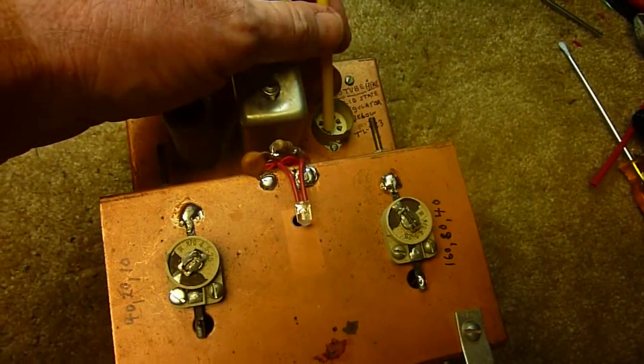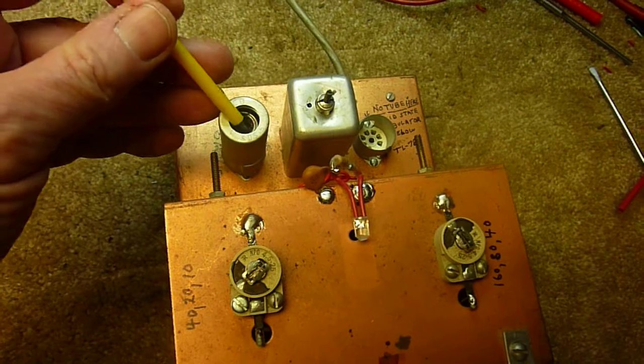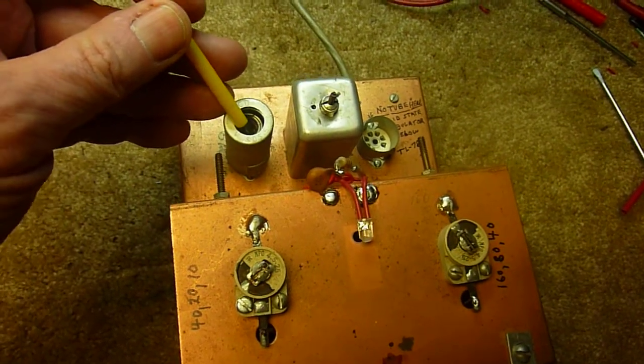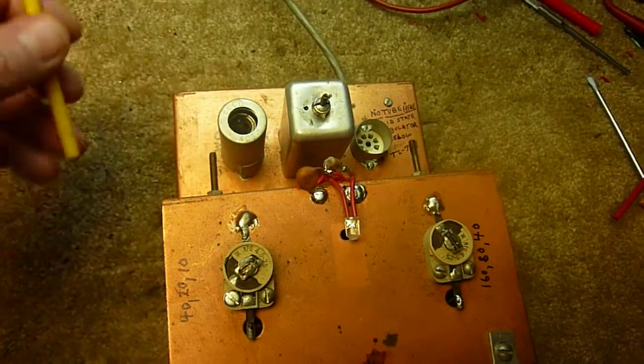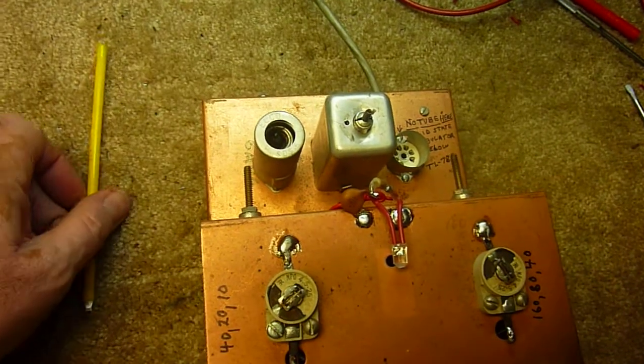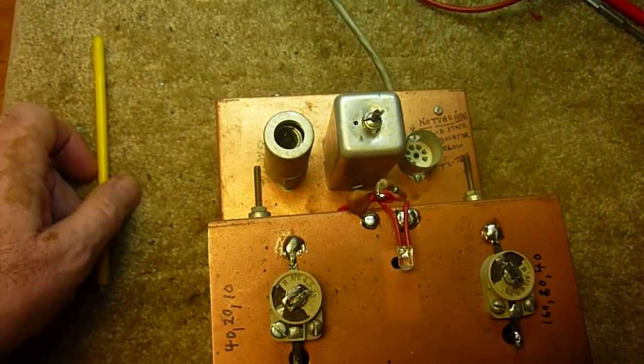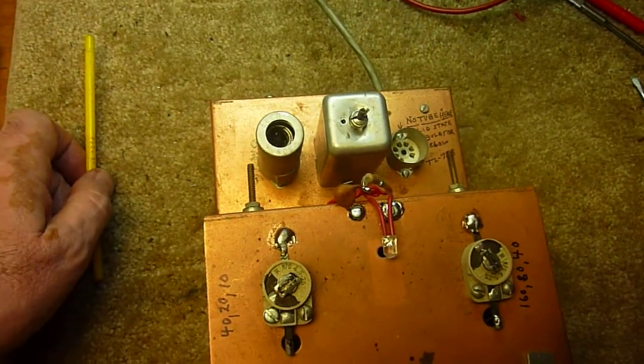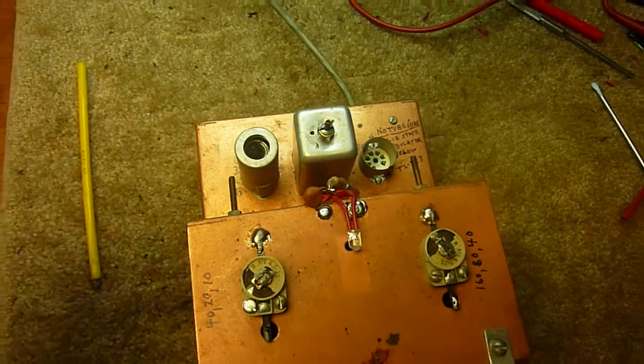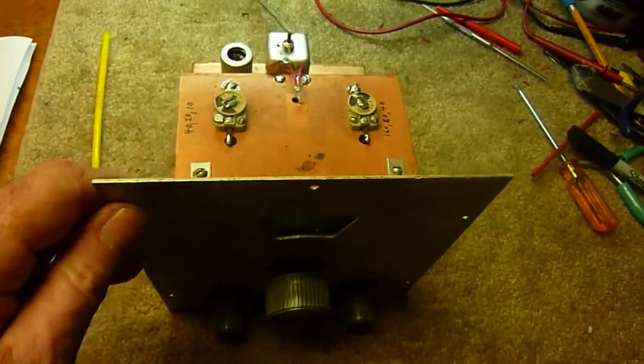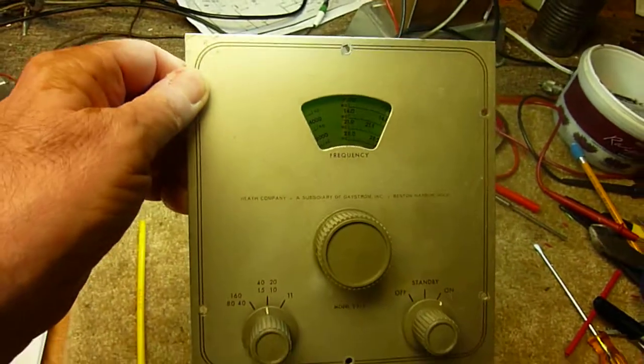I went to the solid state regulator and changed the 6AH6, put that in for the 6AU6, and did the run again after warming it up for another half an hour. And I got a stability of 2 hertz over a period of one hour. That's really good for the old VF1 VFO. So that's the project guys.